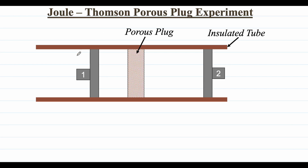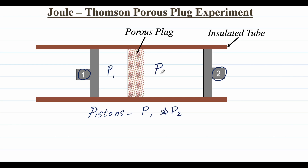On each side of the plate there are pistons — one piston on the left side and another on the right side. These two pistons can be moved to maintain the pressure difference on either side of the porous plug. P1 is the pressure on the left side and P2 is the pressure on the right side of the porous plug.